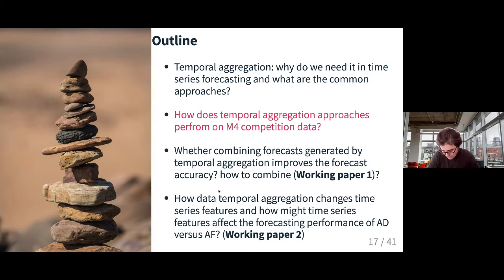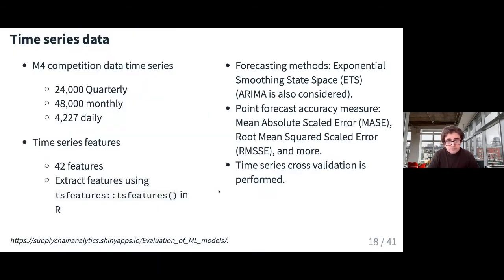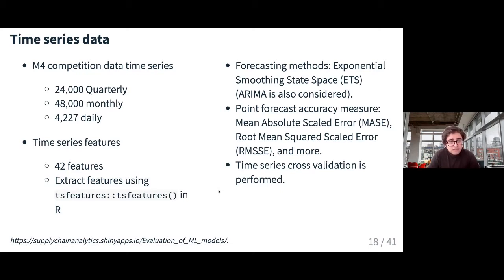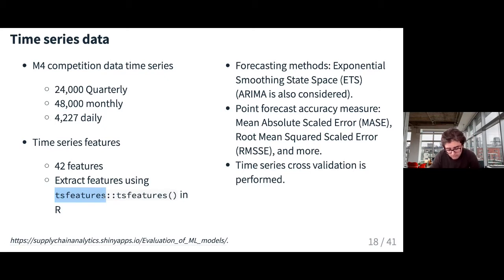The first thing I want to do is examine the performance of aggregating data versus aggregating forecasts using the M4 competition data. I suppose most of you are familiar with M competition datasets — we have yearly, quarterly, monthly, daily, and hourly data, though I haven't looked at the hourly dataset in M4. I also extracted 42 features from these datasets, though I'm not going to discuss the description of these features in detail — if you're interested, you can find the relevant R package. I will share the paper later.